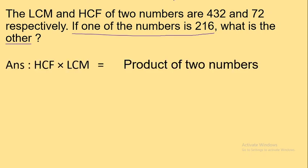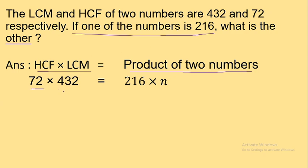First step: write down the formula. HCF multiplied by LCM is equal to product of 2 numbers. Next, HCF is 72 multiplied by LCM is 432, which is equal to 216 times the other number n. I have taken the other number as n.